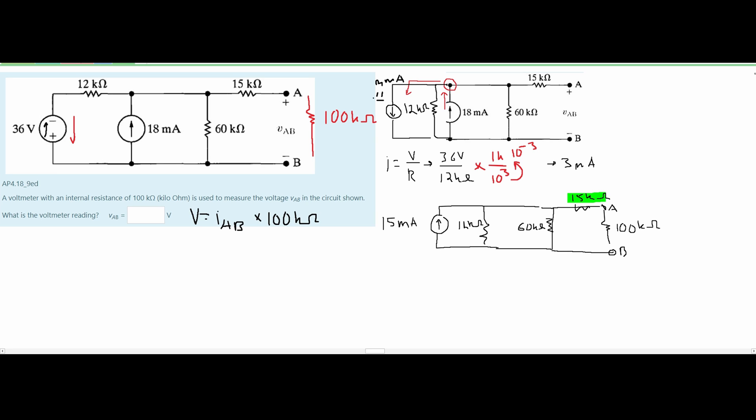We know that our 15 kiloohms and our 100 kiloohms are in series so we can just add them together. For our 12 kiloohms and our 60 kiloohms these are in parallel so we're going to have to use the parallel formula with them.